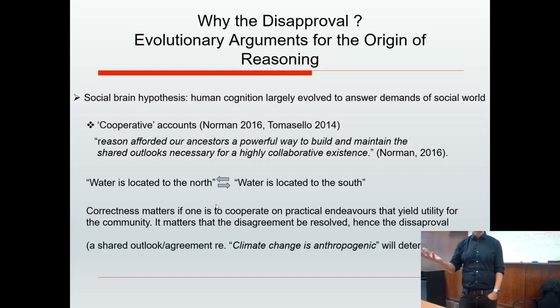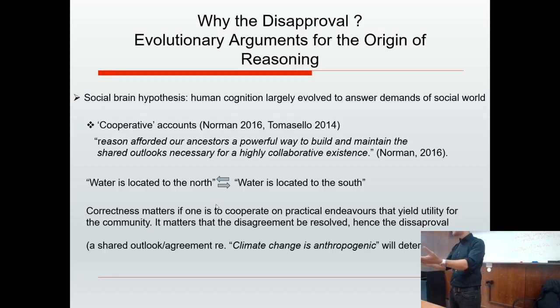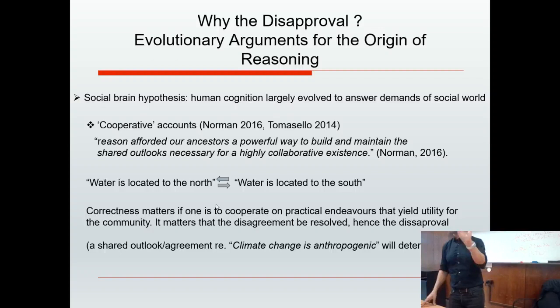Consider proto-human beings on the savannah, desperate for water. I say water is to the north; Heikel says water is to the south. The correctness matters if we are going to cooperate on the practical endeavour of finding water. Agreement about finding water yields utility for the community — practical utility. It's instrumentally useful to resolve that disagreement. This is why disagreement needs to be resolved; why there is a sense of disapproval — because it undermines our collaborative practical projects. Similarly, resolving whether climate change is anthropogenic will affect policy.